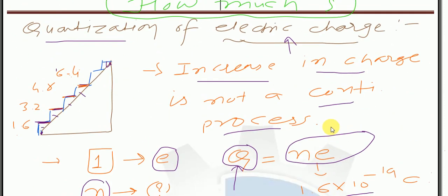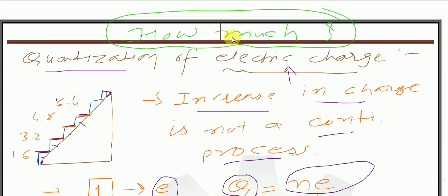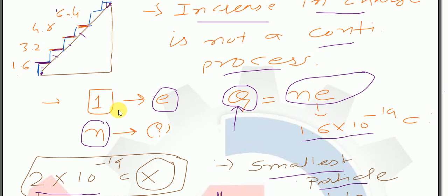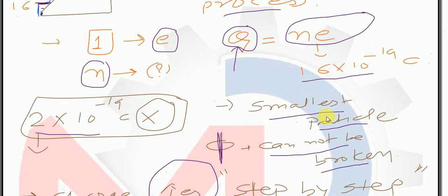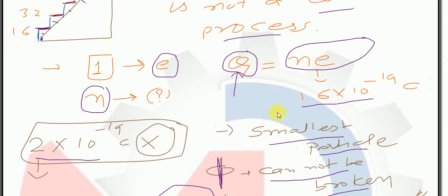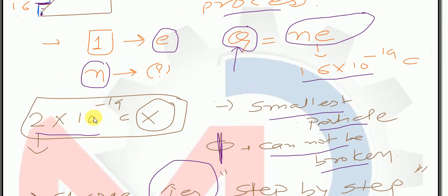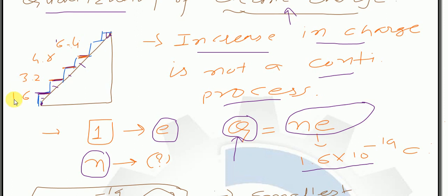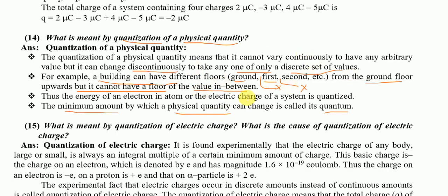Quickly revise करते हैं — quantization का meaning है how much। 1 electron है तो charge E, N electrons हैं तो Q = NE। Electron smallest particle है, it cannot be broken down, so it always goes in unit quantity — integral multiple में ही जाएगा। 2 × 10⁻¹⁹ amount of charge हम नहीं दे सकते। 1.6 से लेकर 6.4 तक की journey step by step ही होती है — it's a discontinuous process। Floor के examples से यह concept clear हुआ।